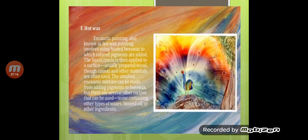Encaustic painting, also known as hot wax painting, involves using heated beeswax to which colored pigments are added. The liquid paste is then applied to a surface — usually prepared wood, though canvas and other materials are often used. Colored pigments are used with heated beeswax. The simplest encaustic mixture can be made from adding pigments to beeswax, but there are several other recipes that can also be used, some containing other types of waxes, linseed oil, or other ingredients.